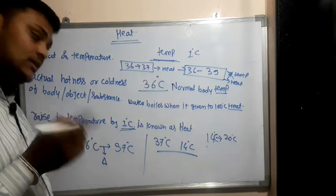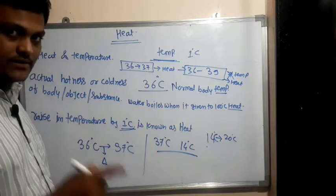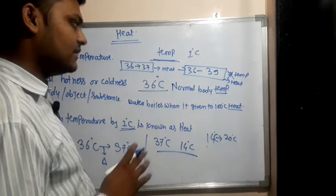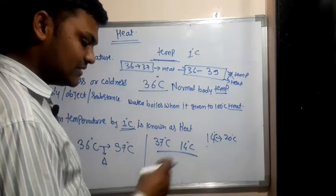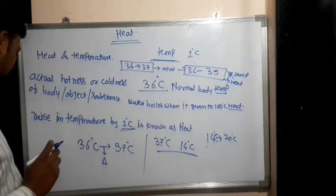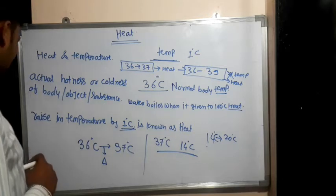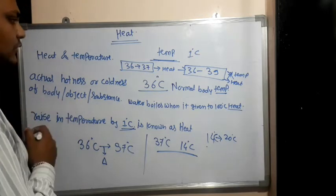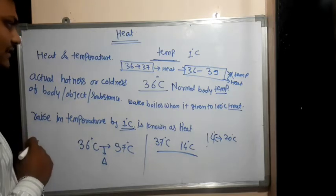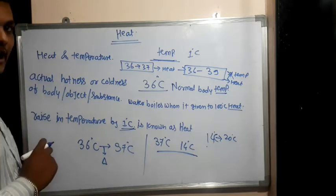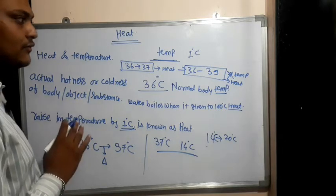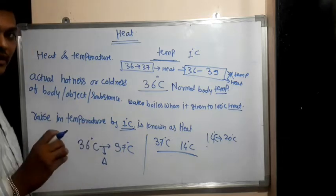When temperature increases by one degree Celsius, it is also known as latent heat. What is meant by latent heat? It is the heat by which the temperature of a system increases by one degree Celsius. When the temperature of a body or object increases, we call that heat. Now we are going to discuss our first point: latent heat of fusion and latent heat of vaporization. But before that, we have to discuss the modes of heat transfer.